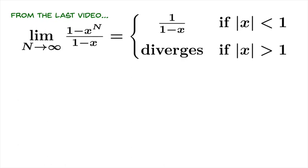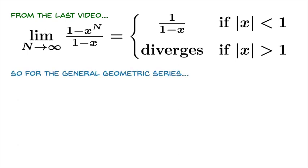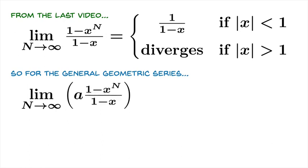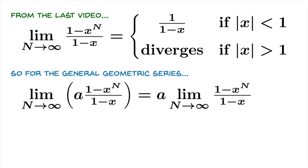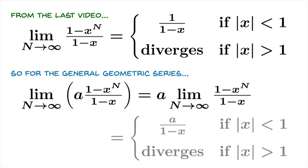From the last video, the punch line was that the limiting value of this sequence is 1 over 1 minus x if the absolute value of x is less than 1, and that sequence diverges if the absolute value of x is greater than 1, excluding the cases x equals 1 and x equals negative 1. For the general geometric series, the calculation is quite simple. The limiting value of the partial sum sigma n is going to be the limiting value of this expression. We can pull out the scalar a using a limit law for scalar multiplication and borrow the result from our last video. So the limiting value of the partial sums is going to be a over 1 minus x if the absolute value of x is less than 1, and that sequence will diverge if the absolute value of x is greater than 1.